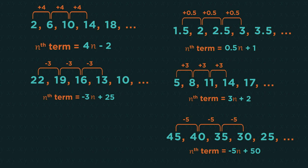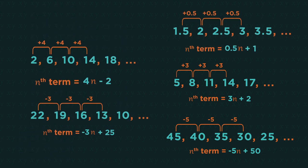Now looking at the numbers after the n's. Where do these come from? Pause the video and have a think. How do you go from 4 to 2? You have to subtract 2. From negative 3 to 22, you have to add 25.